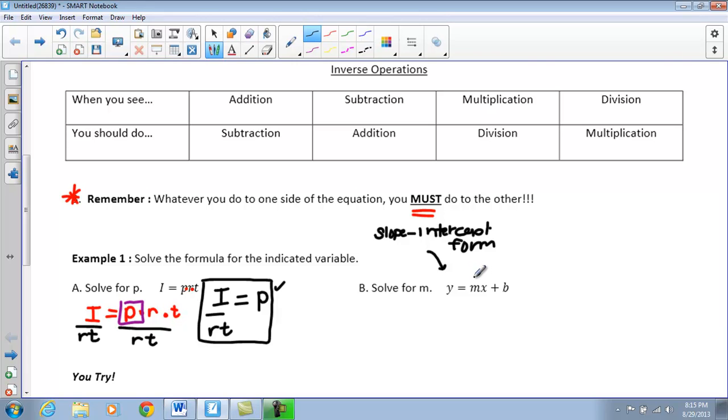Remember, this is my, the M is my slope and the B is my Y intercept. So, what they want us to do is they want us to solve for M. So, I am going to go ahead and start out by kind of boxing my M in. So, if I look, it is being multiplied by X and B is being added to it. So, the first thing I am going to do is I am going to subtract B from both sides.